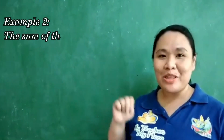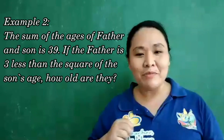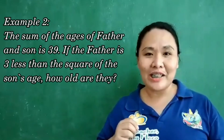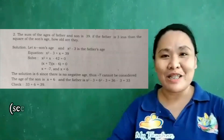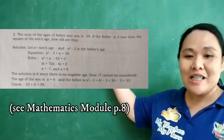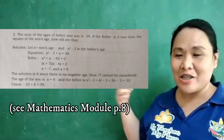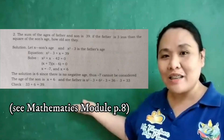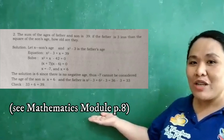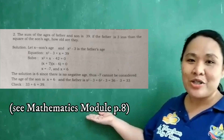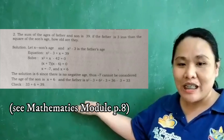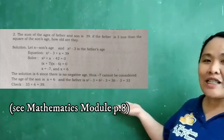Let's proceed to another example. Example number 2 on your math module: The sum of the ages of father and son is 39. If the father is 3 less than the square of the son's age, how old are they? Let x be the son's age, while x squared minus 3 is the father's age. Why? Since the father is 3 less than the square of the son's age. We get x equals negative 7 and x equals 6. There is no negative age, so x equals 6 is the son's age. The father's age: x squared minus 3 equals 6 squared minus 3, which is 36 minus 3, equals 33.